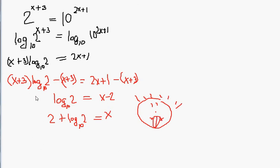Why is this incorrect? The reason it's incorrect is that this would work if it was x plus 3 plus the log of 2 base 10, but it's x plus 3 times the log of 2 base 10. So subtracting x plus 3 does not make the x plus 3s go away. So that's incorrect.